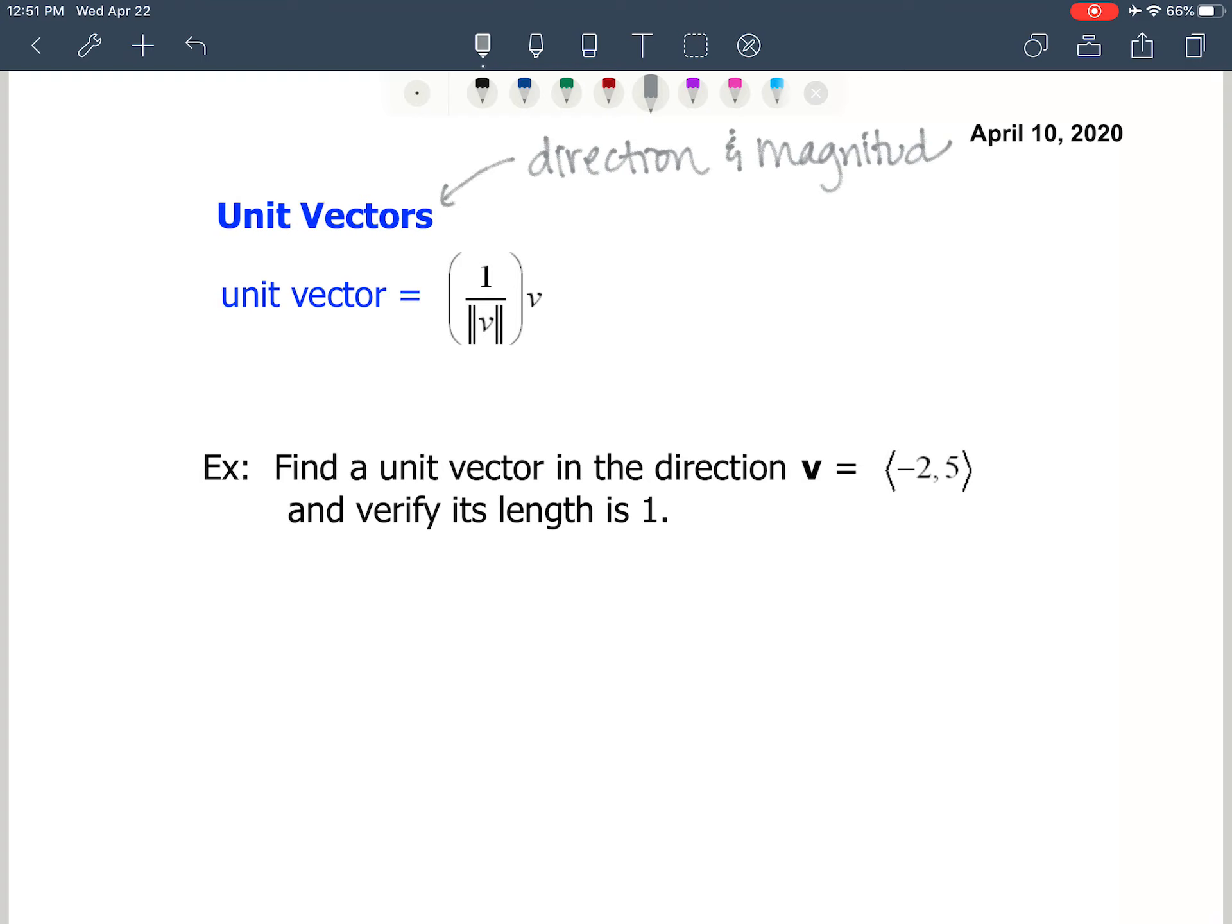But when we talk about a unit vector, what makes a vector become a unit vector is that the magnitude equals 1. So when the magnitude equals 1, it's a unit, one unit.